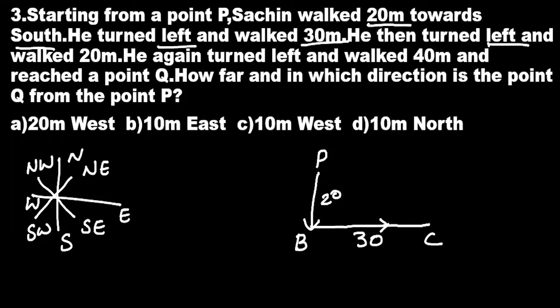He then turned left and walked 20 meters. From C, he turned left — left of C is upwards — and walked 20 meters up to D.